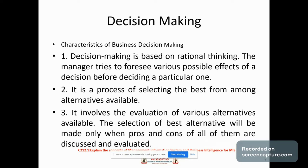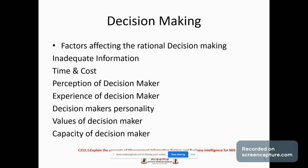There are some factors affecting rational decision making: inadequate information, time and cost, perception of the decision maker, experience of the decision maker, the decision maker's personality, values of the decision maker, and capacity of the decision maker. These are the factors affecting rational decision making.